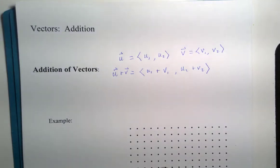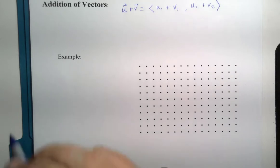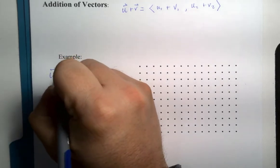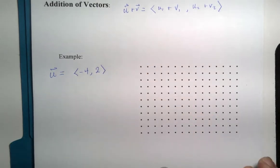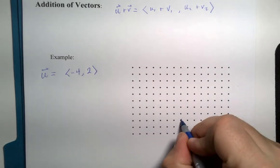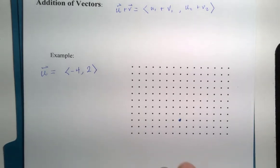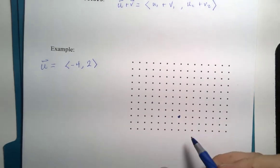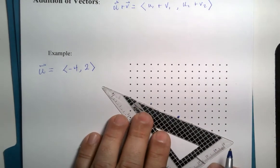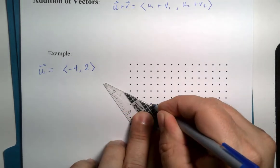And for this example, we are looking at the vector u equals negative 4 comma 2. So, if it starts here, then it will go left 1, 2, 3, 4 units, and 1, 2 units up. And it will look something like this right here.